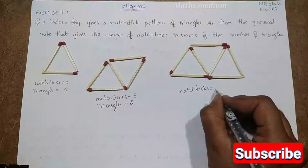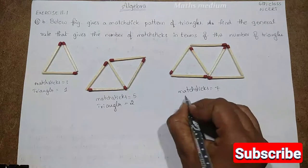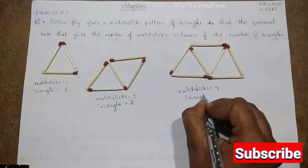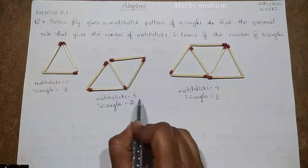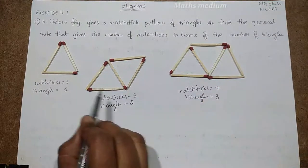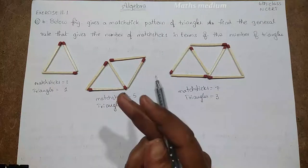Here also matchsticks 1, 2, 3, 4, 5, 6, 7, and triangles 3. See here matchsticks 3, 5, 7. It means every triangle needs extra 2 matchsticks.